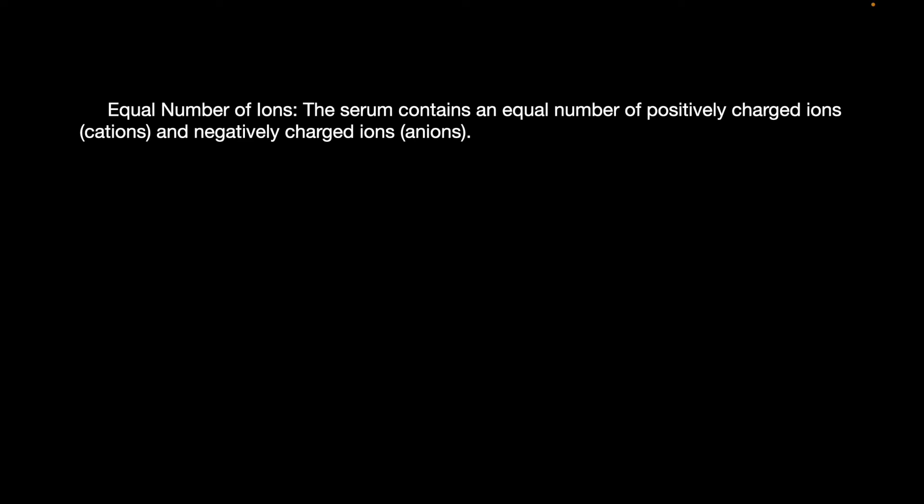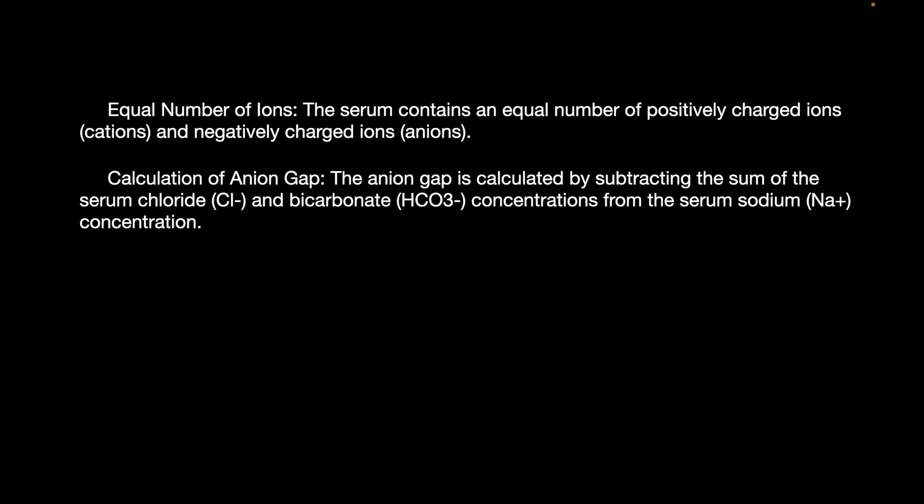The anion gap exists because we have an equal number of ions inside our body. The serum contains an equal number of positively charged ions and negatively charged ions. The anion gap is calculated by subtracting the sum of the serum chloride and bicarbonate from the serum sodium — essentially the measured cations minus the measured anions.